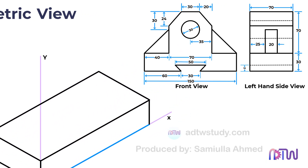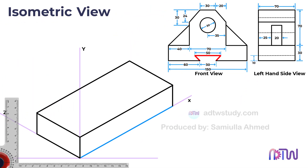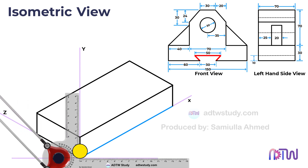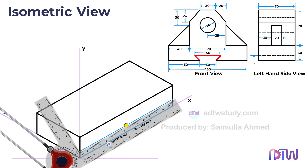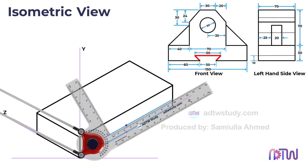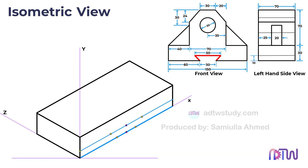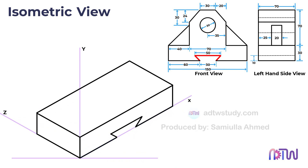Following the previous steps, we now proceed to draw the inner slot on the base. The top width of the base measures 50 millimeters while the bottom width is 30 millimeters. The height of the slot is 10 millimeters. Begin by drawing a line parallel to the x-axis at a height of 10 millimeters from the origin, then mark the midpoint of this line. From the midpoint, mark points 25 millimeters away on both sides, and also mark points 15 millimeters away on either side. Finally connect these marked points to construct the slot and include all required details.